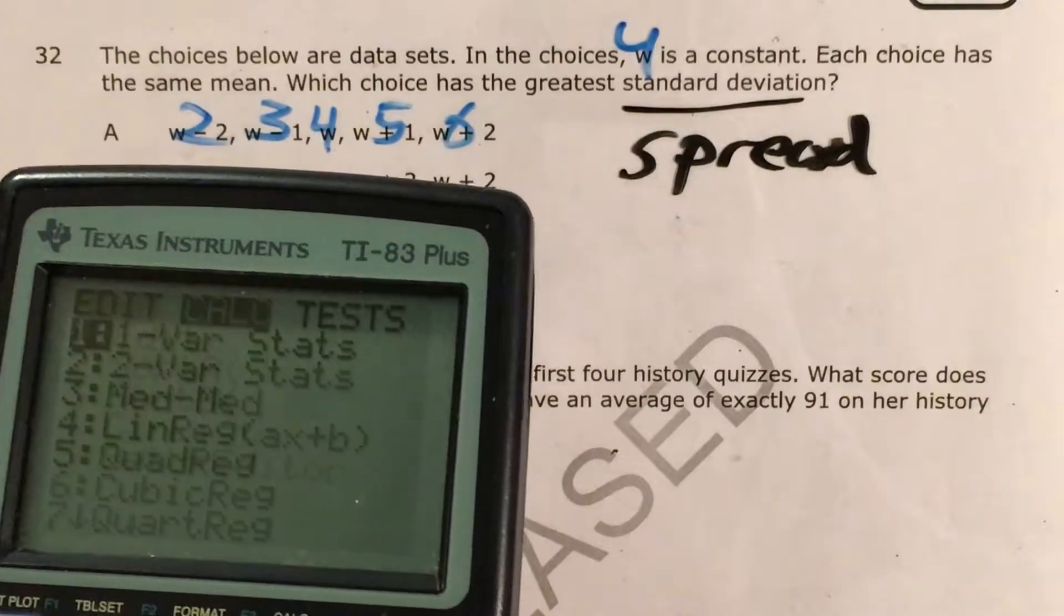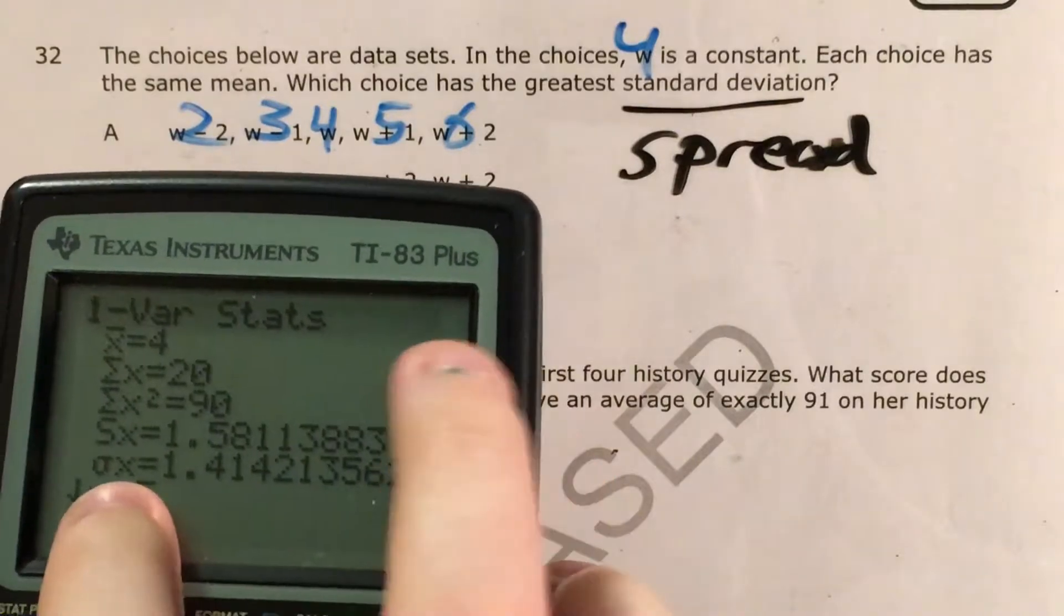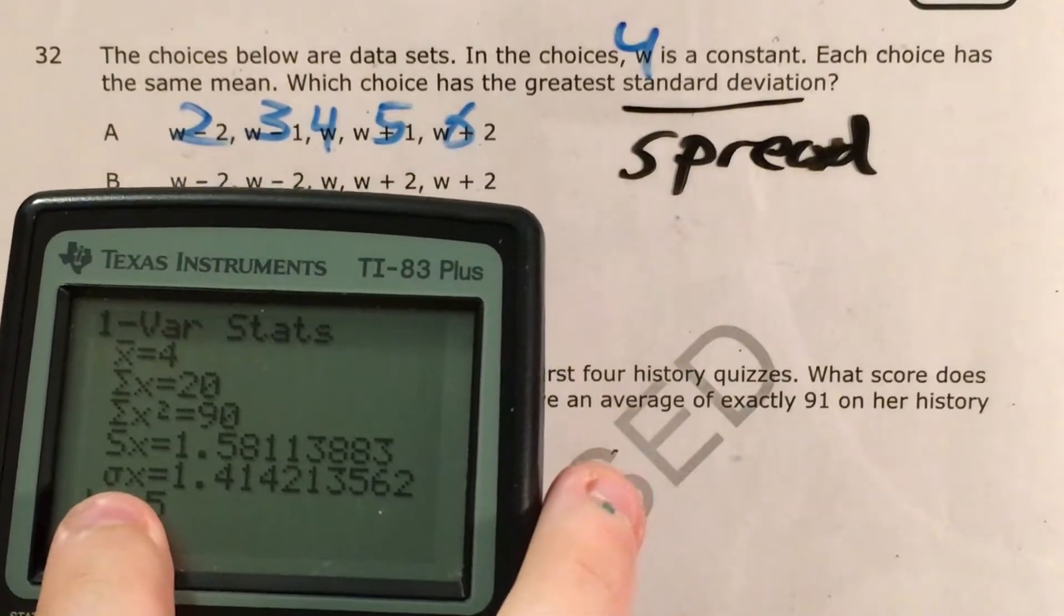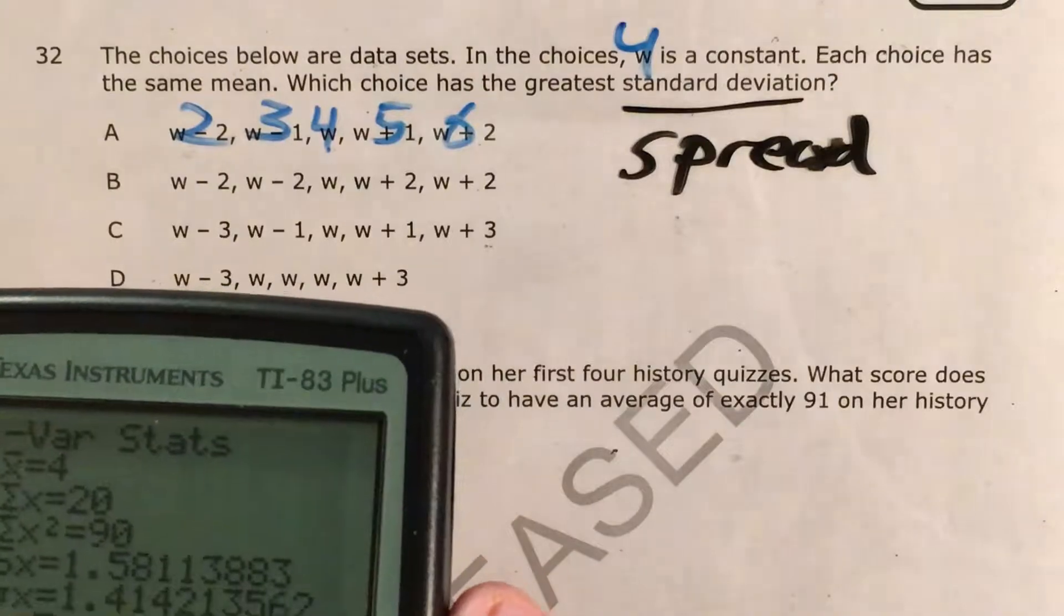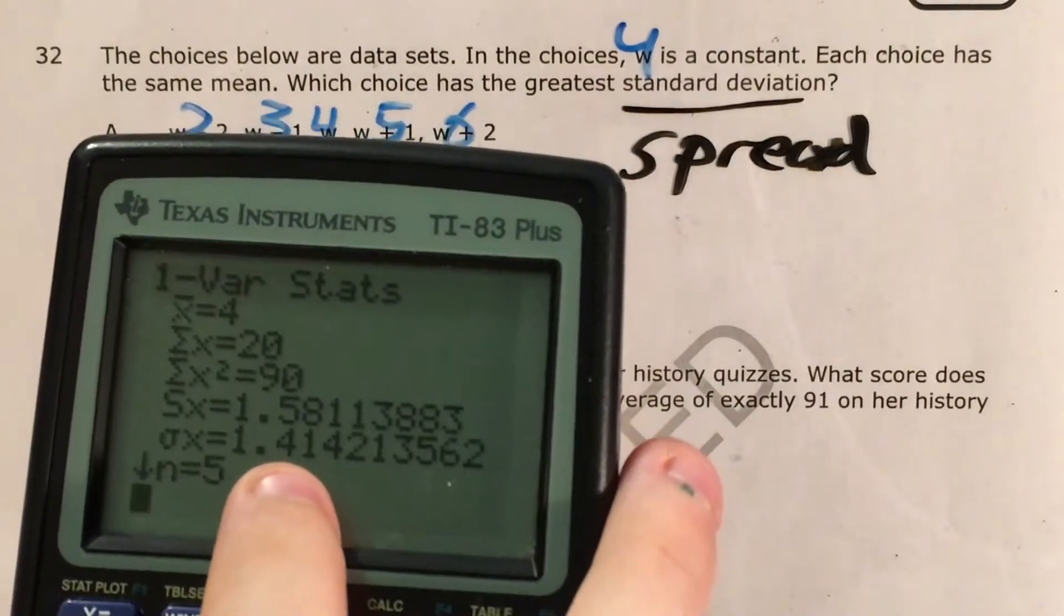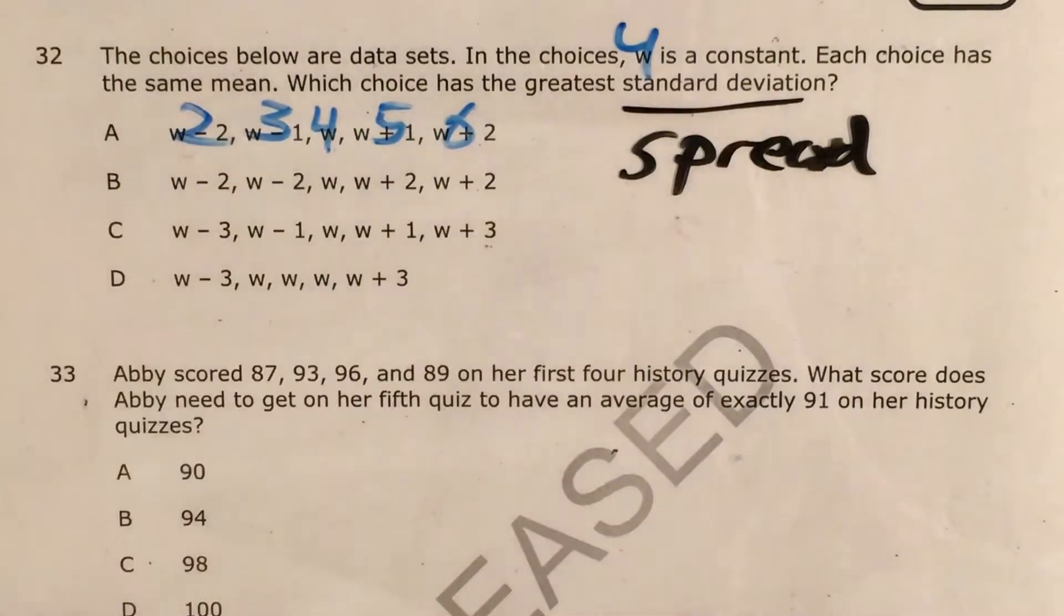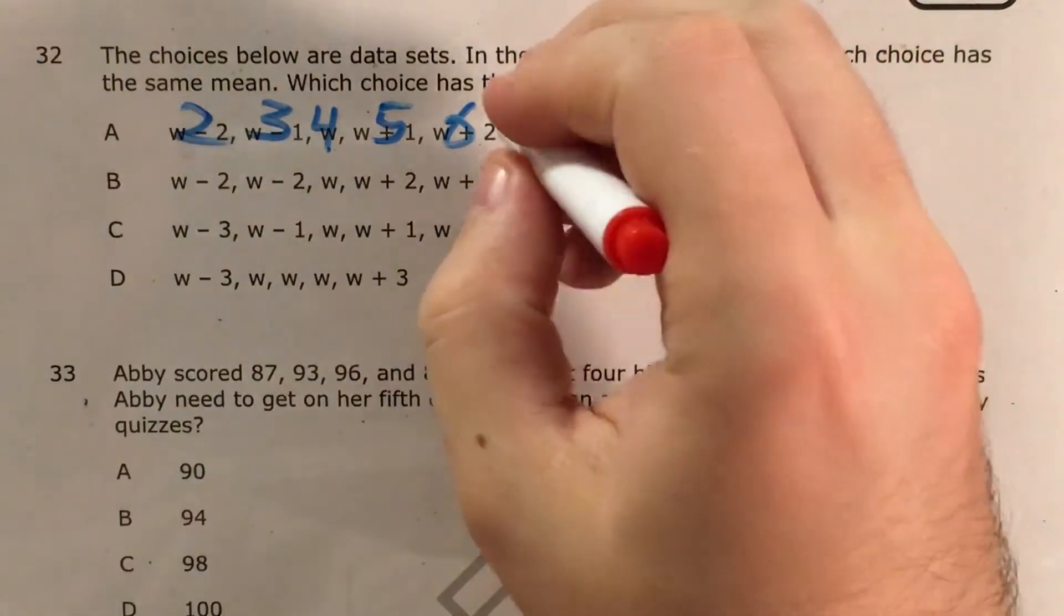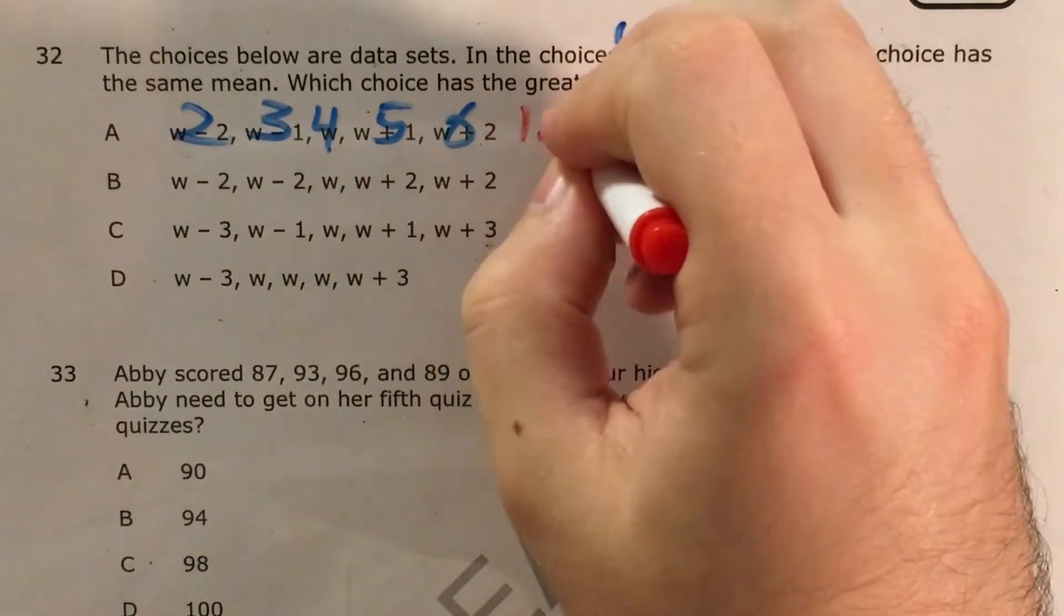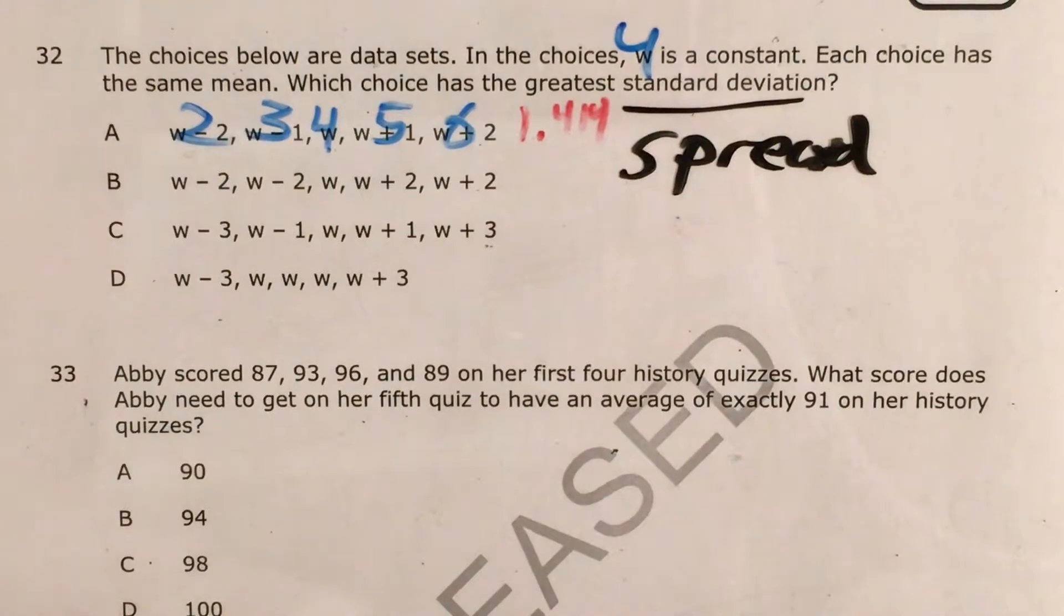I press stat again, calc one variable statistics, and this is the one I'm interested in, this weird O-looking thingy that I believe is a Greek letter. This is 1.414. So my standard deviation of that set is 1.414, just about.